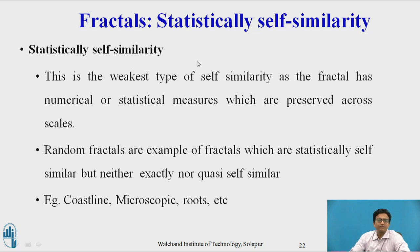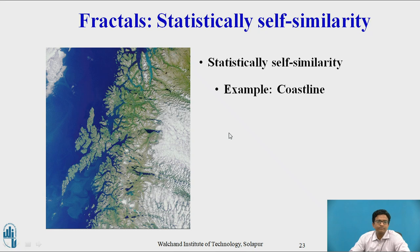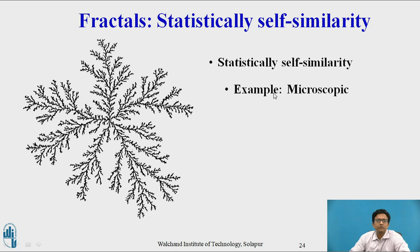The next type is statistically self-similarity fractal. This is the weakest type of self-similarity, as the fractal has numerical or statistical measures which are preserved across scales. Random fractals are examples which are statistically self-similar, but neither exactly nor quasi self-similar. Examples include coastline and microscopic or root fractals. In this fractal, you cannot find exactly similar or approximate similarity — it is statistically self-similar, that is, it is in a distorted form.